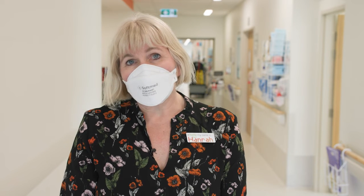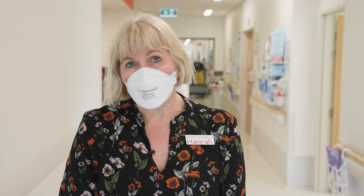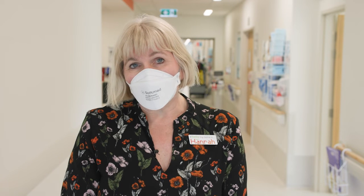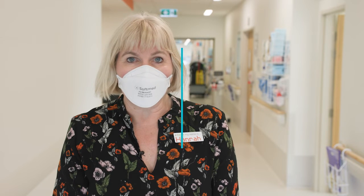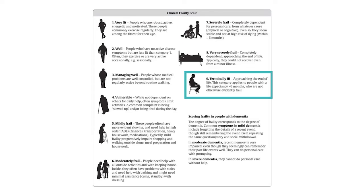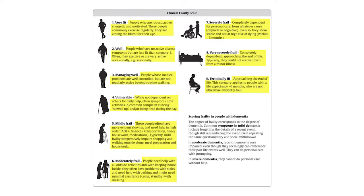The clinical frailty scale is a well-validated tool that describes a person's function before they came into hospital. It's really useful for assessing the patient in a standard way and also predicting how they're going to recover from their hip fracture. This is the clinical frailty scale developed by Ken Rockwood. It ranges from one being very fit to nine being terminally ill. The description attached to each picture and number gives a good idea of how people function and enables you to assess people against this scale.